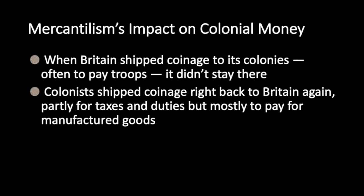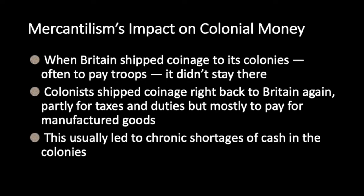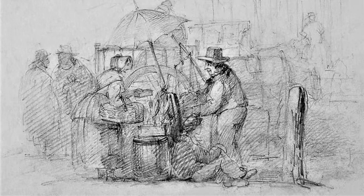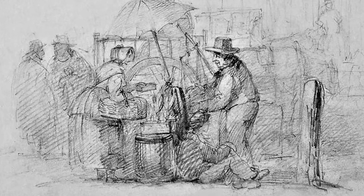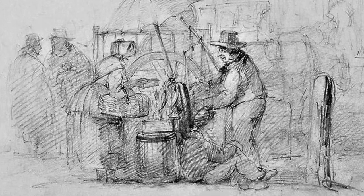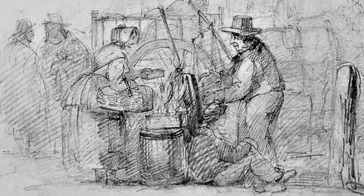Because of mercantilist policies, there was almost always a chronic shortage of coinage in the colonies. Although Britain did ship coinage to the colonies, in part to pay troops, the coins tended to be shipped right back again to pay for manufactured goods. Consequently, local merchants and their customers had a great deal of difficulty finding cash for their transactions.